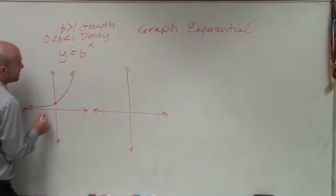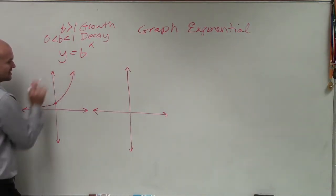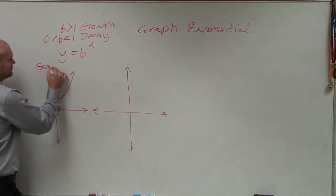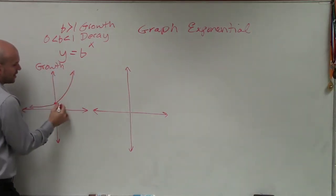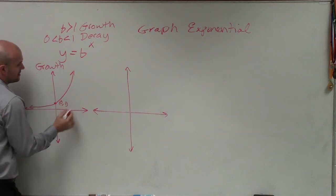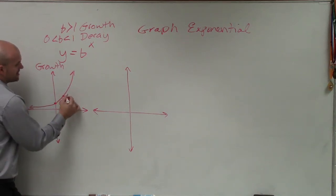There are a couple of important points in y = b^x when it's a growth graph. The y-intercept is going to be at (0, 1), and then the next point over at x = 1 is going to be at the point (1, b).